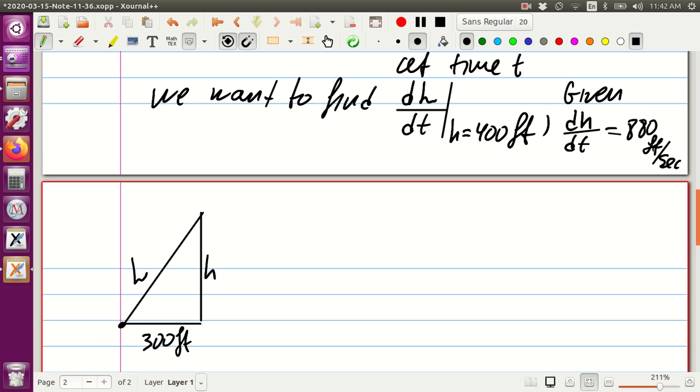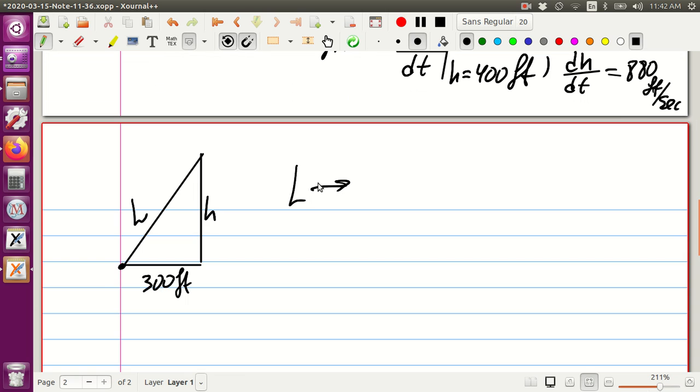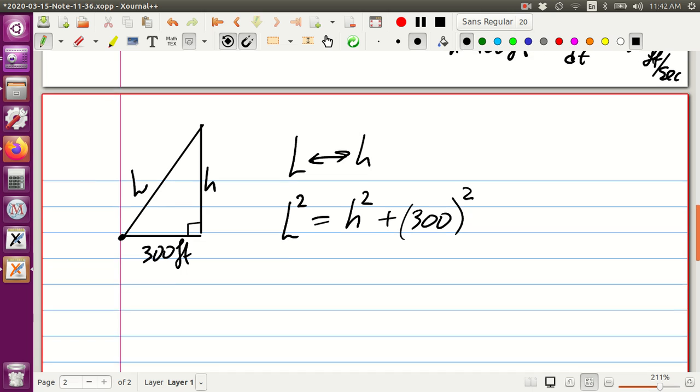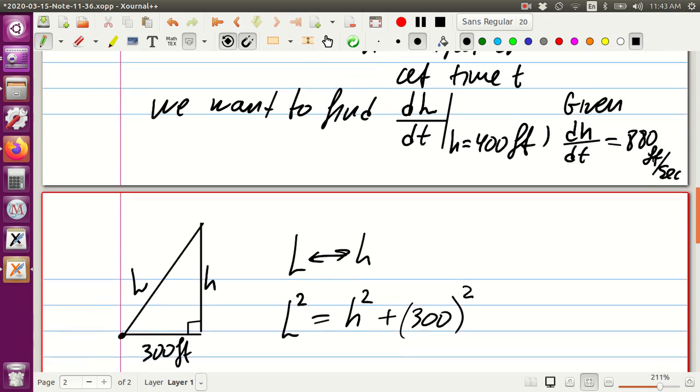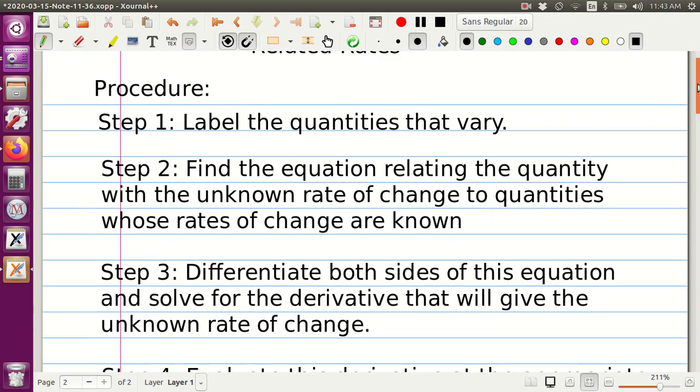So how is L related to h? Since it's a right triangle, we know that L squared is equal to h squared plus 300 squared. Let's try to calculate these quantities. Let's see in which step in the process we are. If we go back and check the steps, we did the labeling, we found the equation.